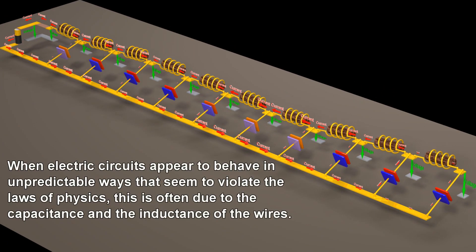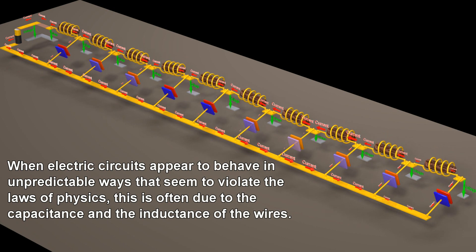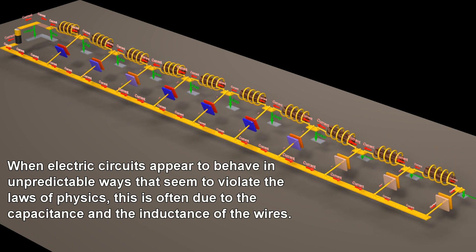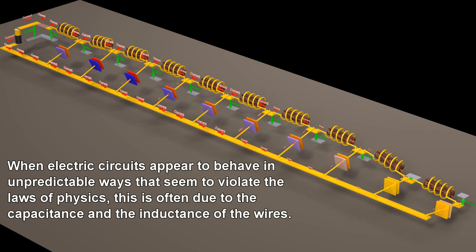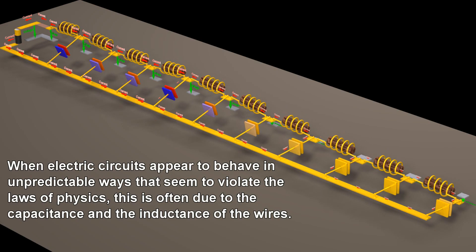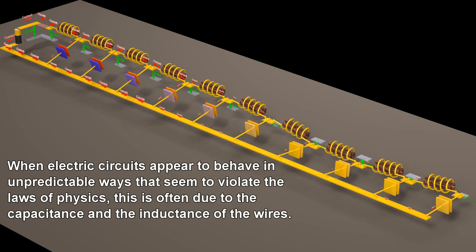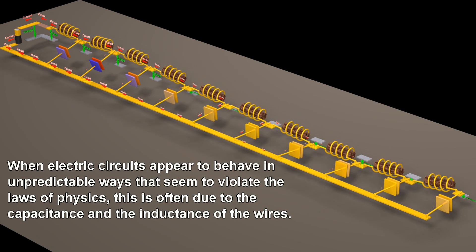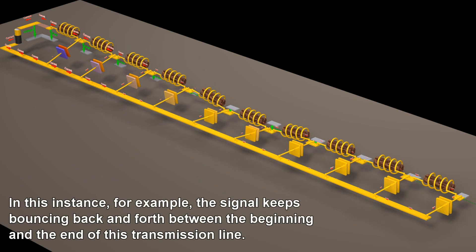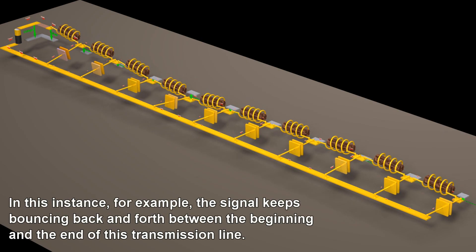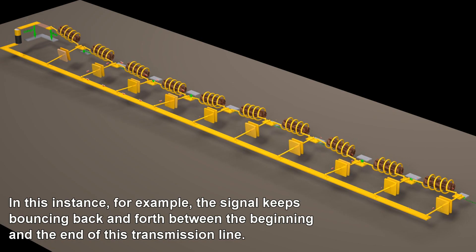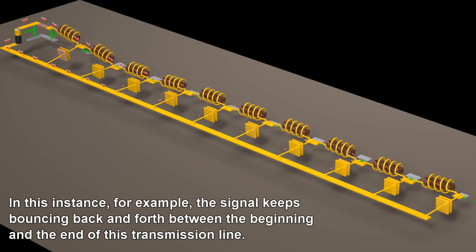When electric circuits appear to behave in unpredictable ways that seem to violate the laws of physics, this is often due to the capacitance and the inductance of the wires. In this instance, for example, the signal keeps bouncing back and forth between the beginning and the end of this transmission line.